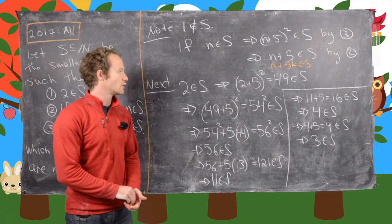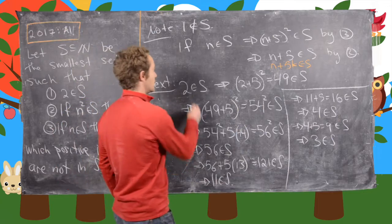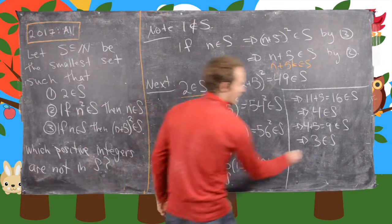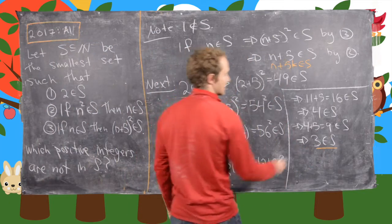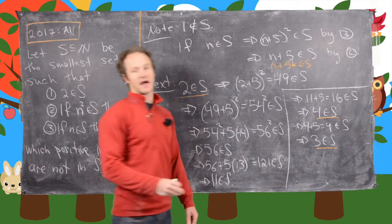So let's look what we've got so far. We know that 2 is an element of S. We know that 3 is an element of S. And we know that 4 is an element of S.